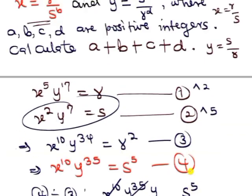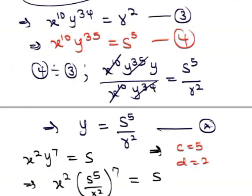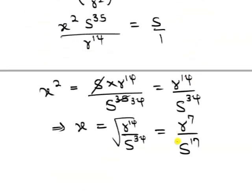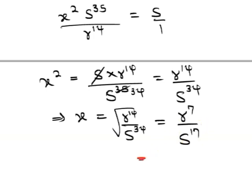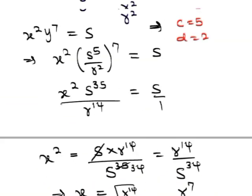While up here for x, they said x = r^a / s^b. So that means it implies here that our a = 7 and our b = 17. So the implication then is that a + b + c + d will simply be equal to the sum of all that we have gotten.